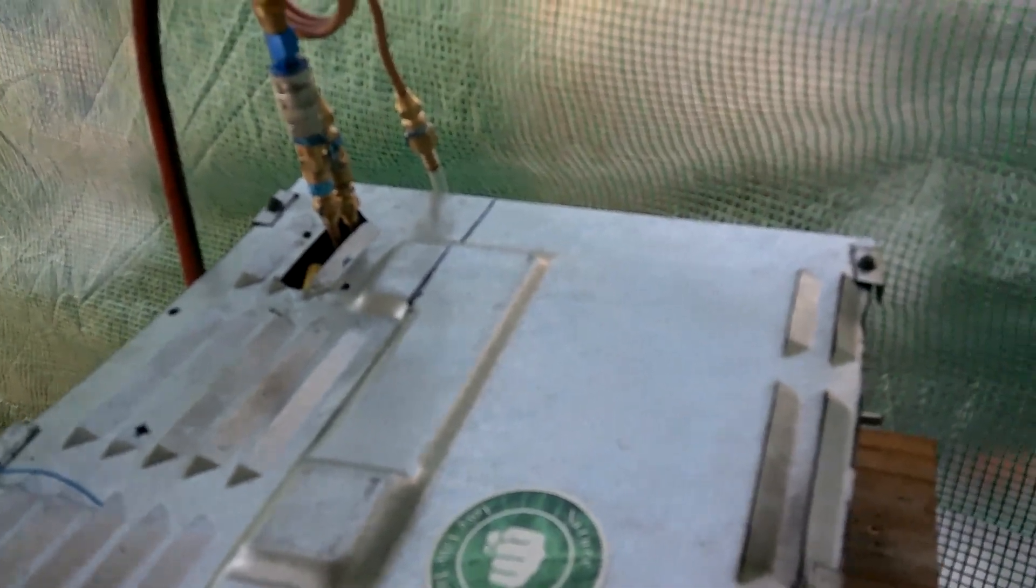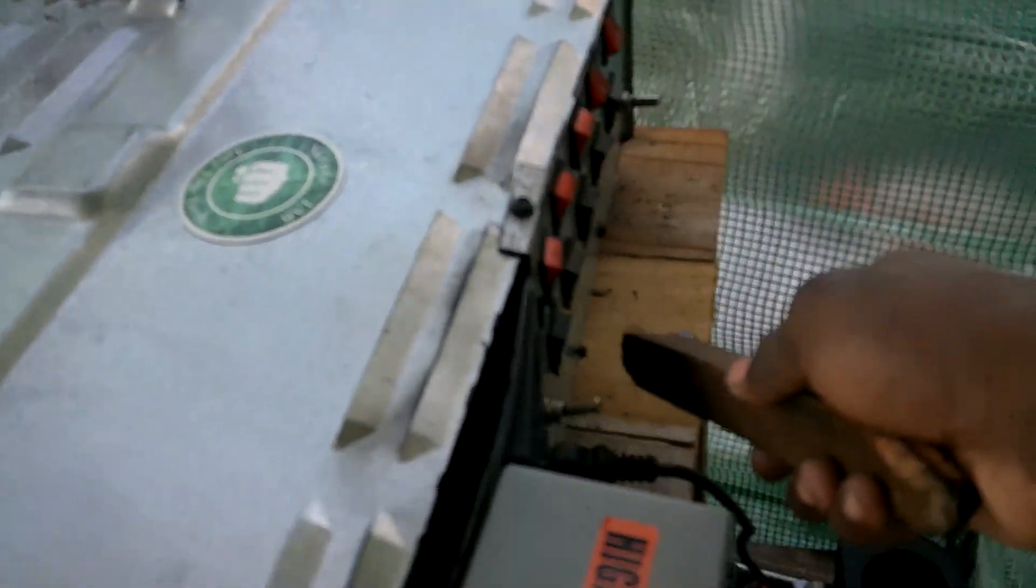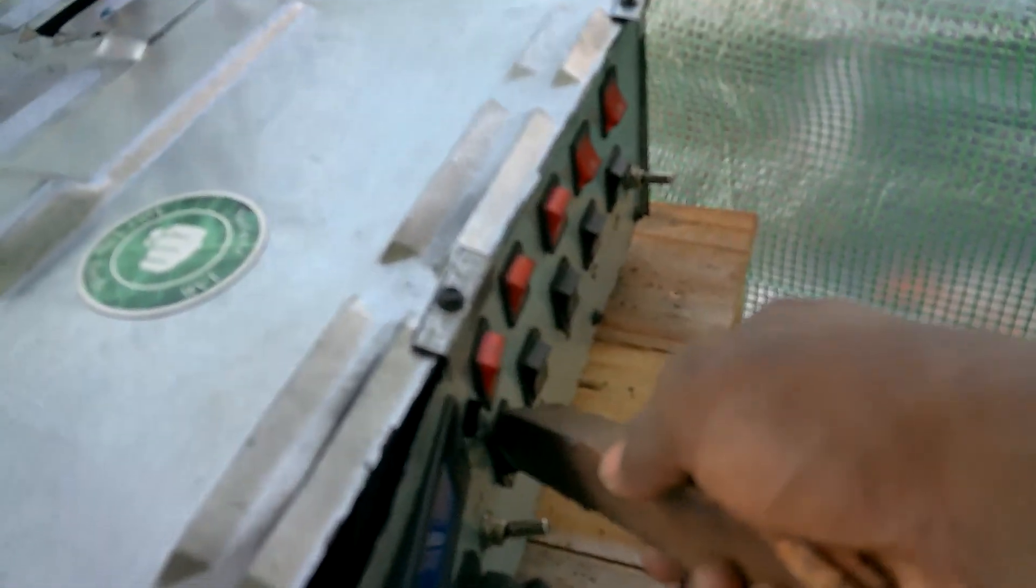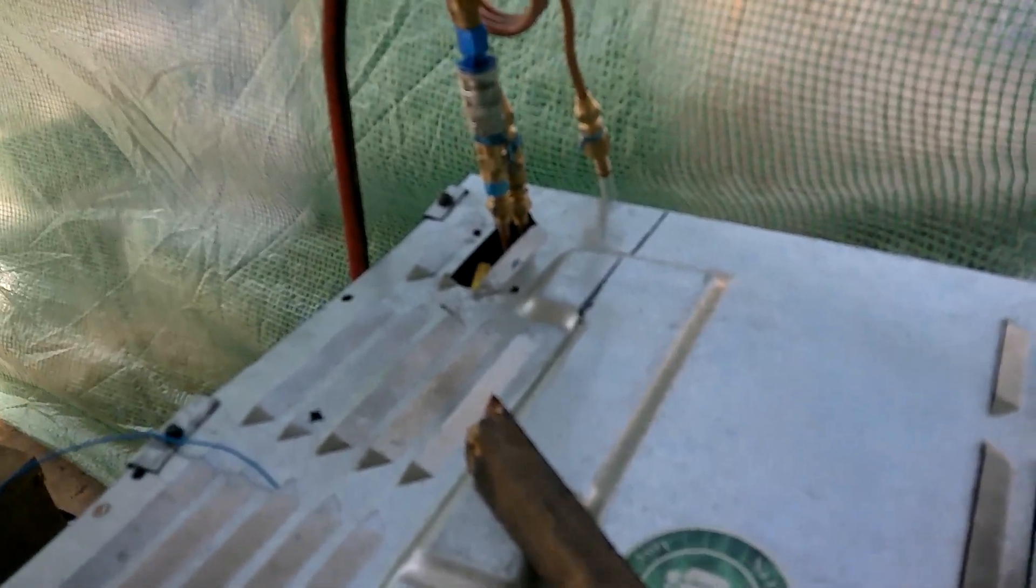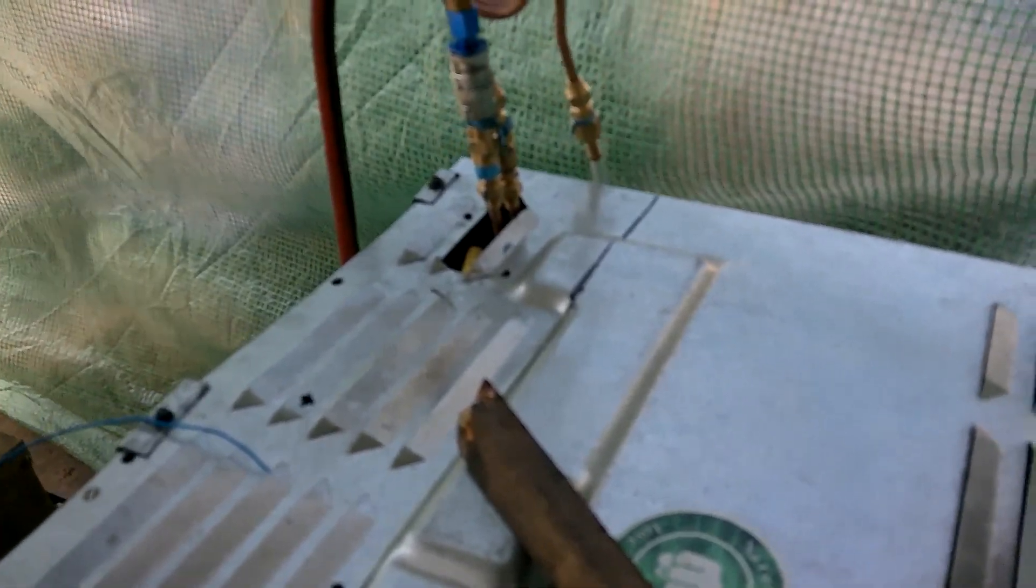Next I turn on every single transformer individually to make sure none of them are having any shorts, nothing's going wrong. When we're really doing this for real, we're not going to be caught by surprise. The magnetron switches are down here. First one, that one's good. Second, that's good. Third. Cool, all three magnetrons work, all three transformers capacitors work, all the fans work.